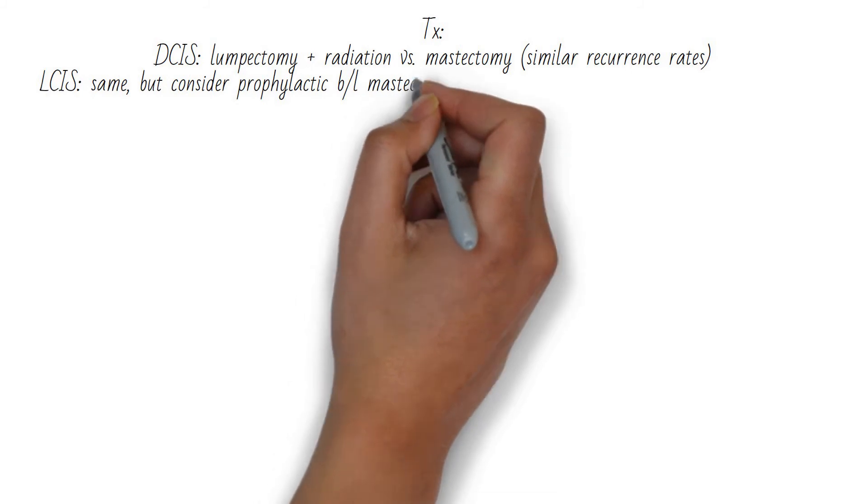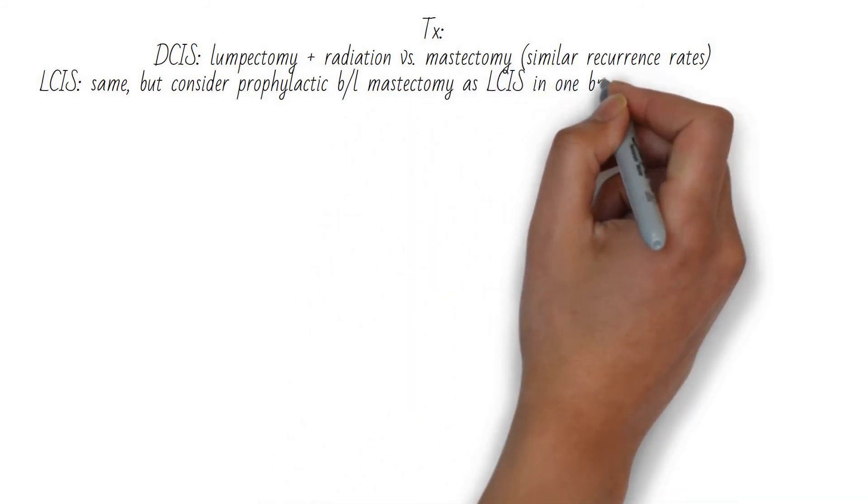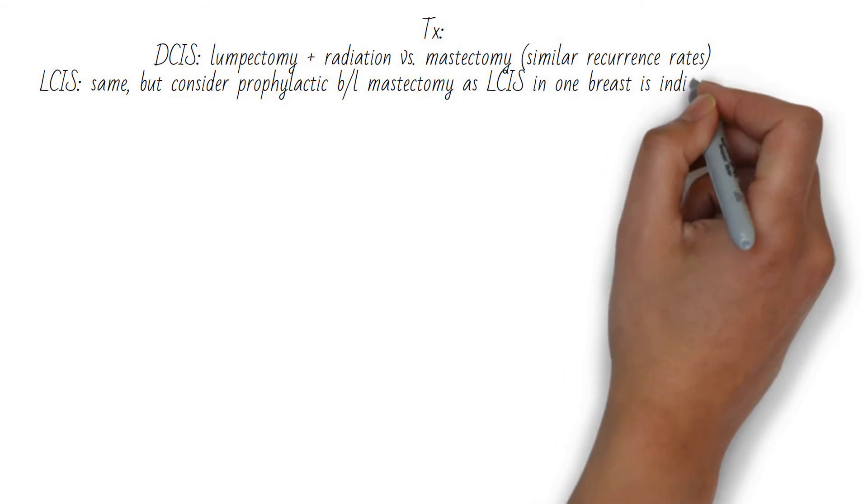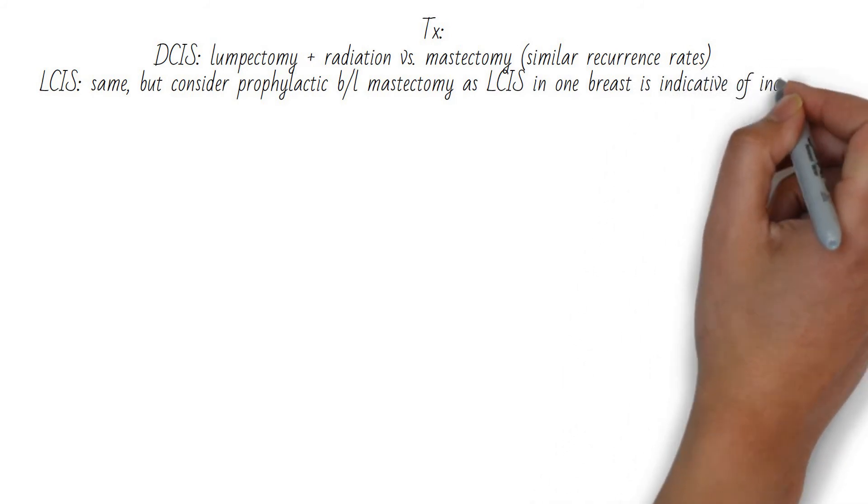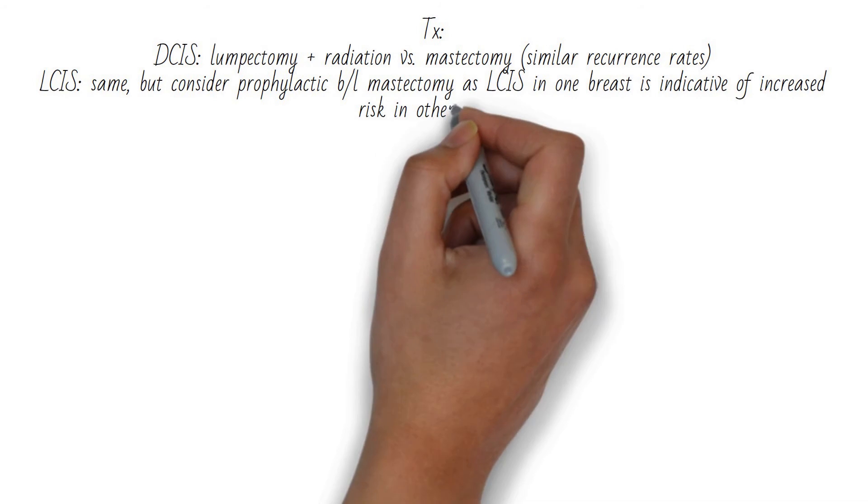For ductal carcinoma in situ, consider lumpectomy and radiation versus a mastectomy. They have similar recurrence rates, with lumpectomy and radiation having a slightly higher recurrence rate.